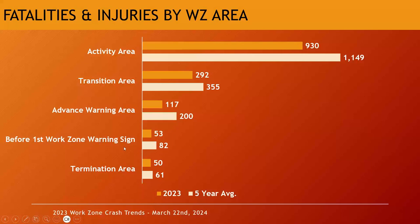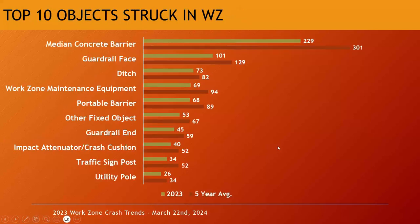There's also a category for crashes before the first work zone warning sign, and the termination area at the very end of the work zone where traffic returns to their normal path. Looking at fixed object crashes — the top 10 objects struck — include median concrete barriers from long-term work zones, guard rails, ditches, maintenance work zone equipment, portable barriers, the end of a guard rail, impact attenuators or crash cushions, traffic signs, and utility poles.